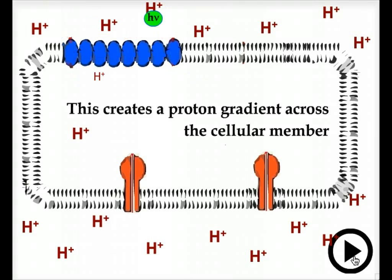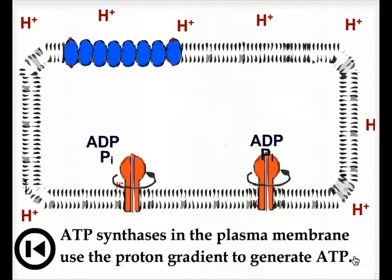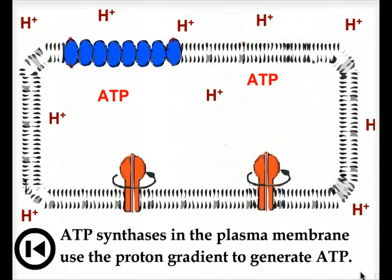This creates a proton gradient across the cell membrane. ATP synthases in the plasma membrane then use this proton gradient to generate ATP. It's also the case that this proton gradient is used to drive the flagella which lets the cell swim.